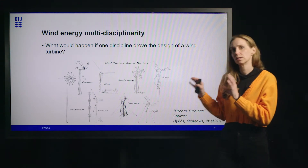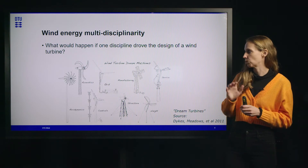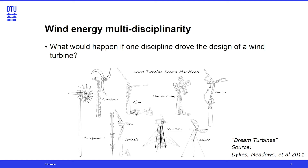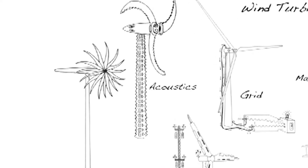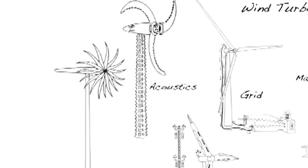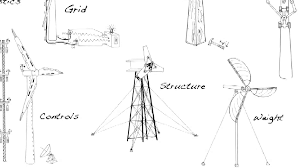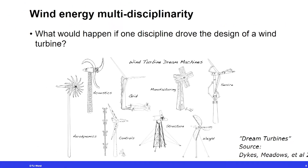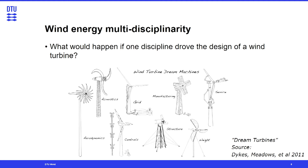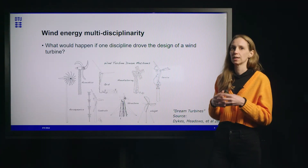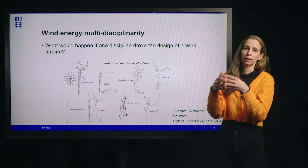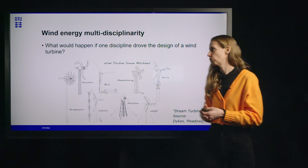If we were to consider one design discipline over the others as driving the design, we'd end up with a caricature of a turbine. These are a little silly, but they give a flavor of what a single-discipline dream turbine could look like. This is inspired by an old cartoon from aerospace adapted for wind turbines. For aerodynamics, you might get a turbine with infinitely many infinitely thin blades capturing as much kinetic energy as possible. For structures, you might get a really beefy machine that would perform very poorly aerodynamically. This brings into focus how important it is to consider all disciplines together when designing a wind turbine — or a wind farm, which is a collection of turbines with additional design considerations.